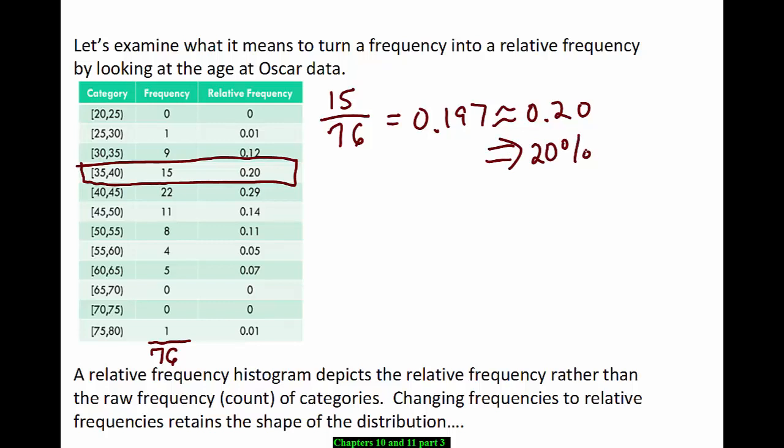And 0.2 is what's in our relative frequency chart here. So a relative frequency is just the proportion or fraction of times a value occurs. Changing frequencies to relative frequencies retains the shape of the distribution.